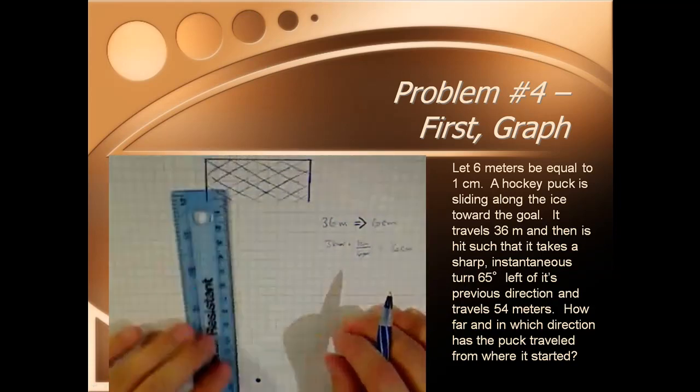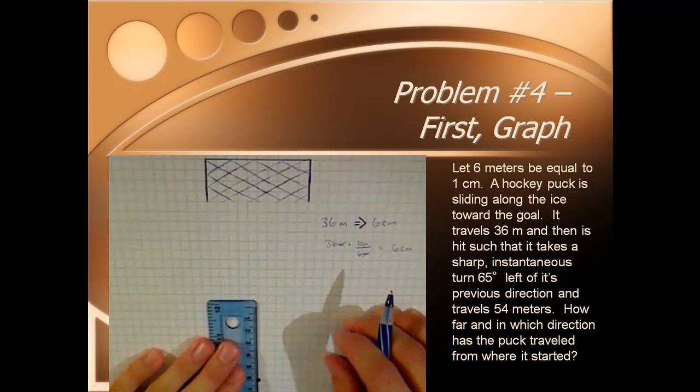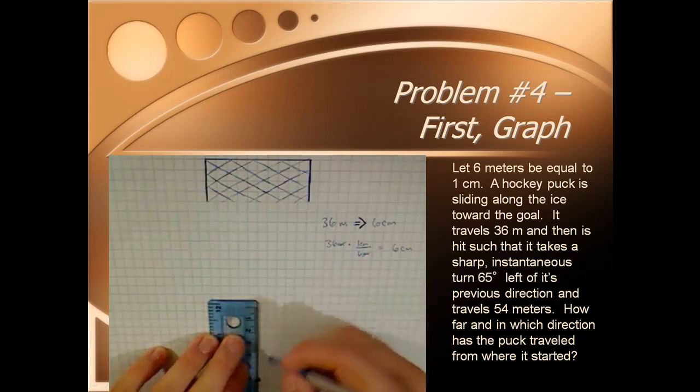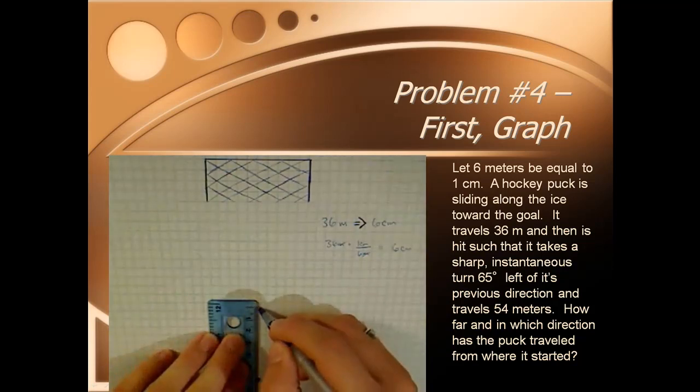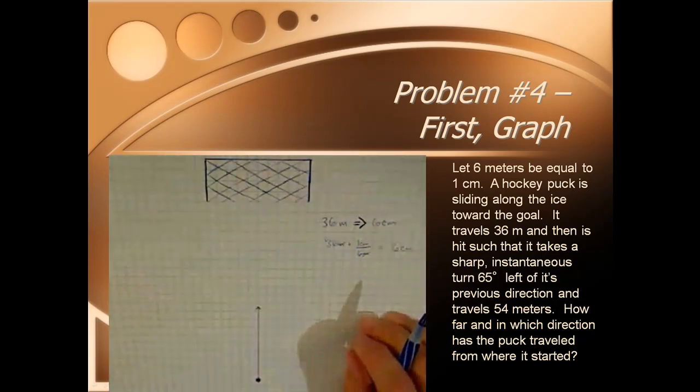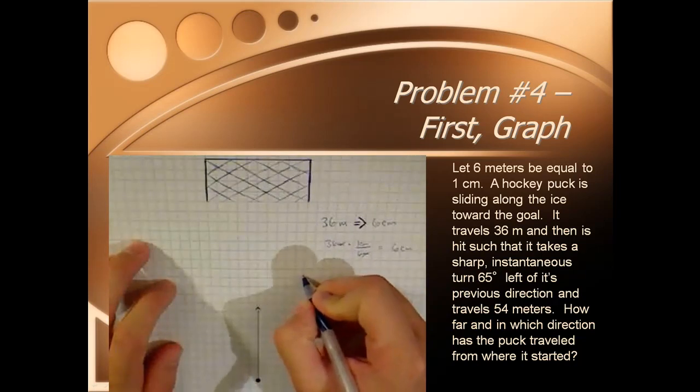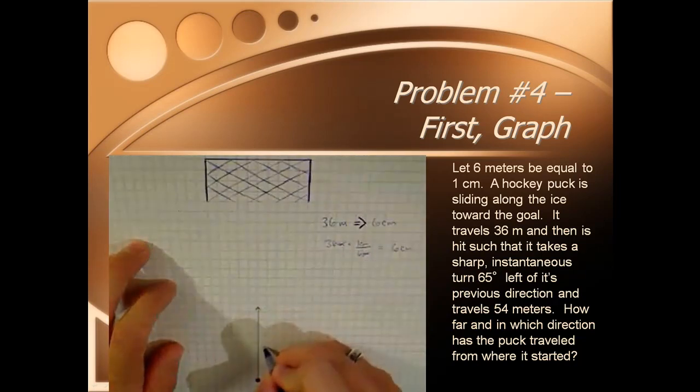Remember, when you're using the ruler, you've got to use the side that is centimeters. Don't use the inches side. Draw your line, and here's our first vector. Now we're going to do the conversion over here for the next part. It said we have 54 meters. Sorry, let's label this real quick, 36 meters.